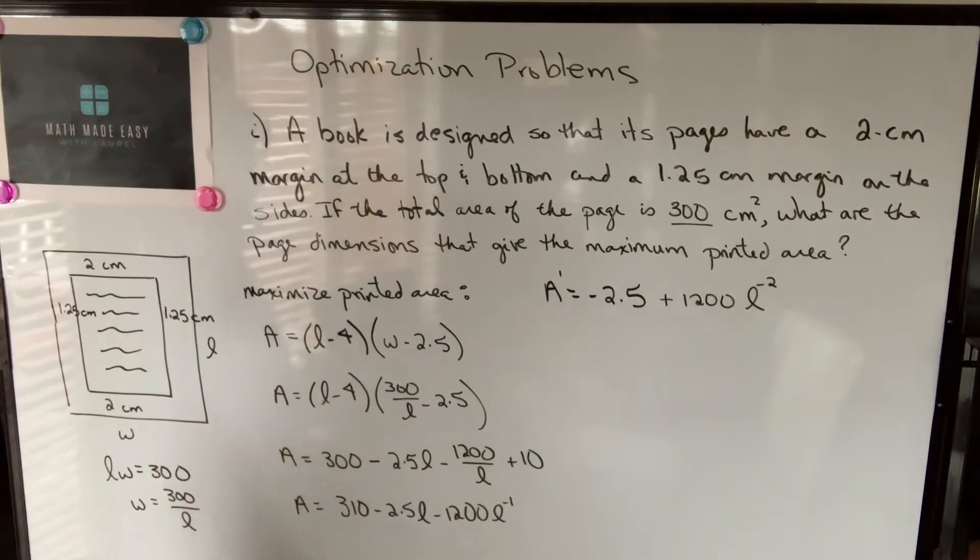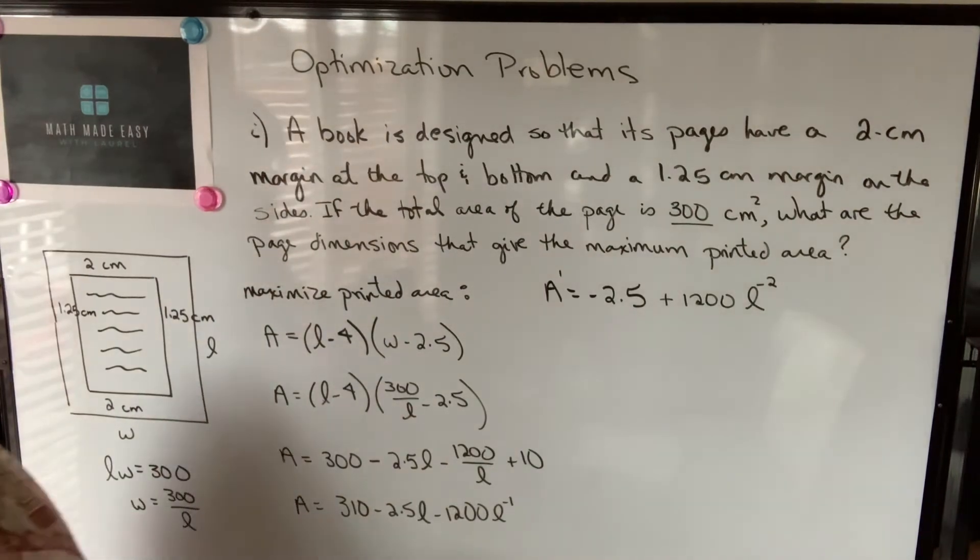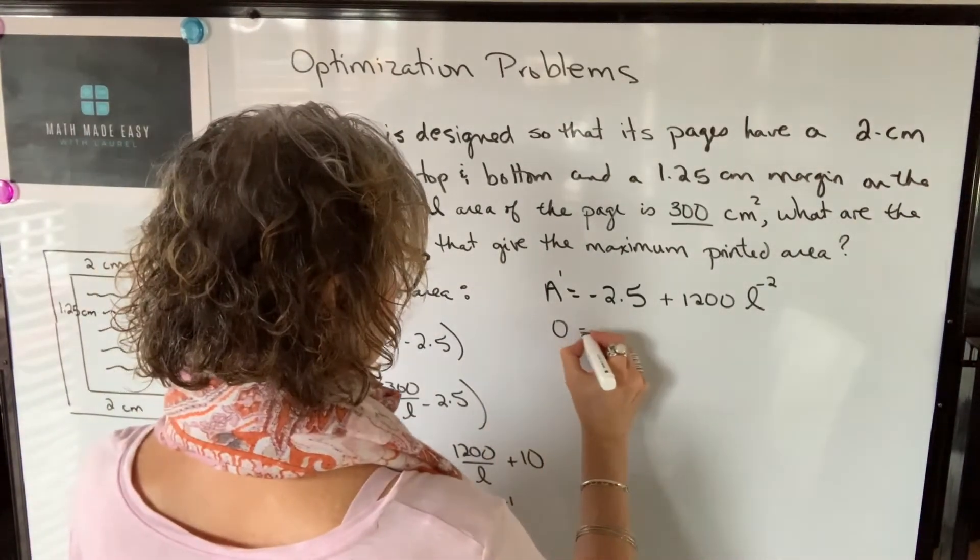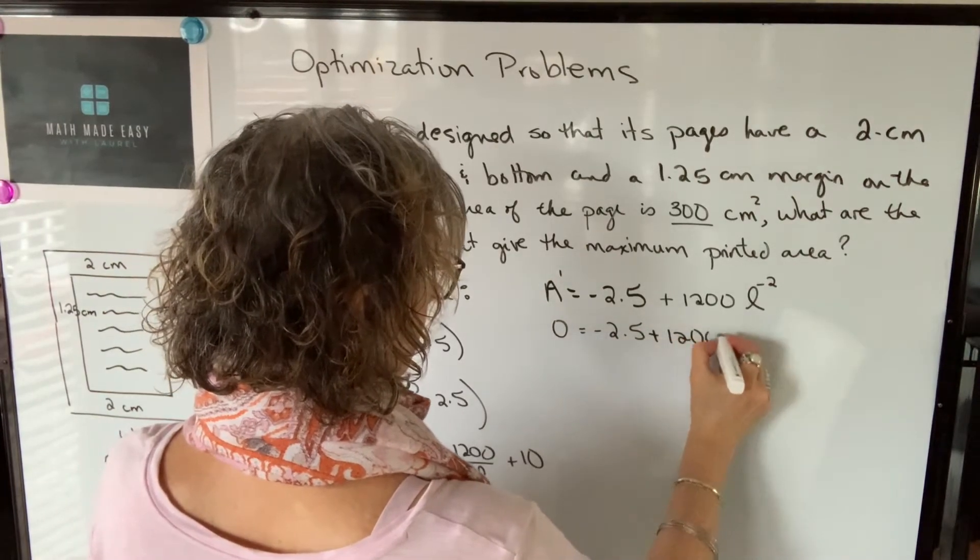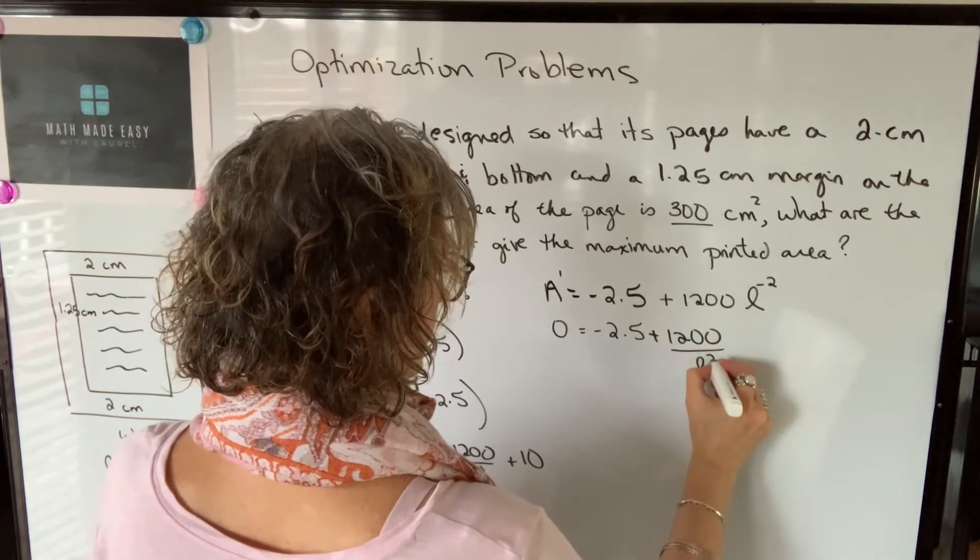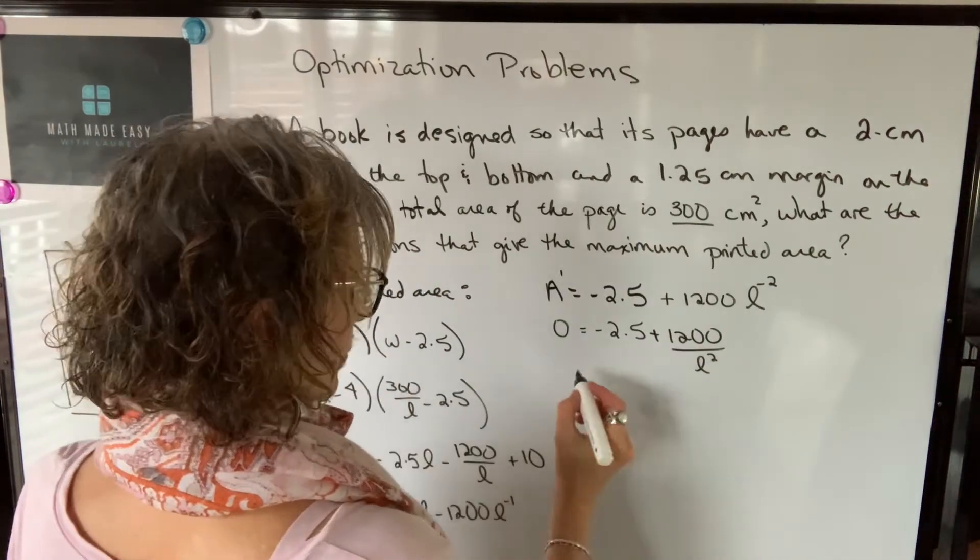So that's the derivative of this function. I set that equal to zero. I'm going to write this as 1200 over L squared. Now I'm going to solve.